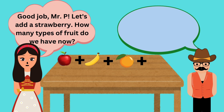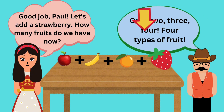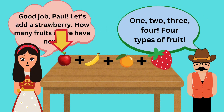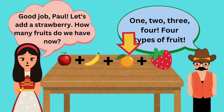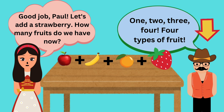Let's add a strawberry. How many types of fruit do we have now? One, two, three, four. Four types of fruit. Yeah!